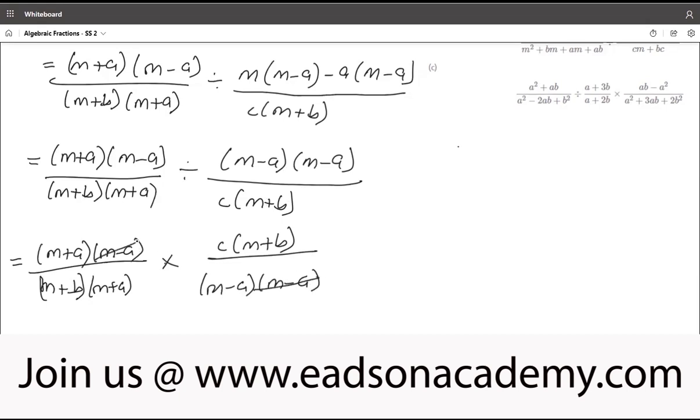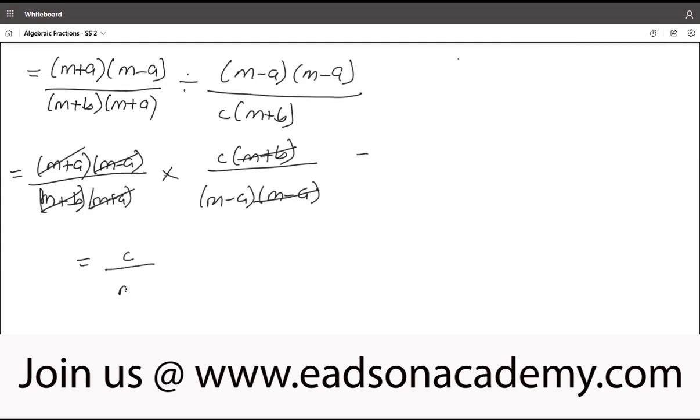So this m minus a can cancel this m minus a. m plus b can cancel m plus b here. There's another m plus a here, which can cancel this m plus a. So all in all, what we have left here is 1. 1 times c is c. So our final answer, therefore, is c over m minus a. You see that complex fraction has reduced to this small thing there.